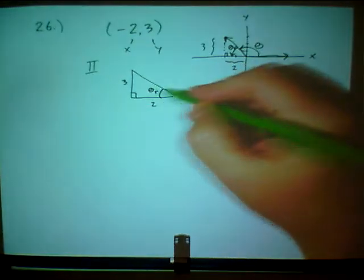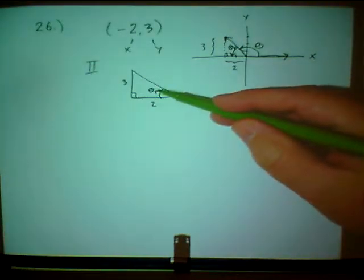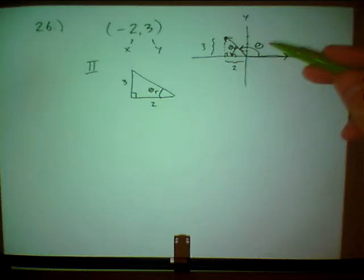Now I can find the trig functions for that reference angle, and it's actually going to be the same as the trig functions for the original angle. That's one of the nice things about trig. If I can find the trig functions for this little triangle, I've got the trig functions for my original angle.